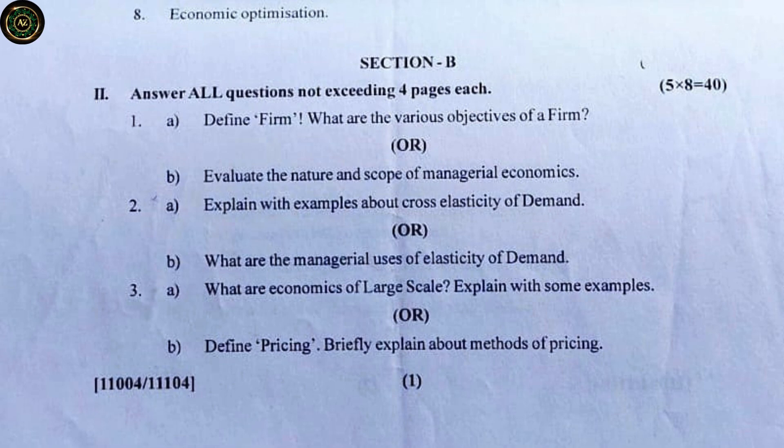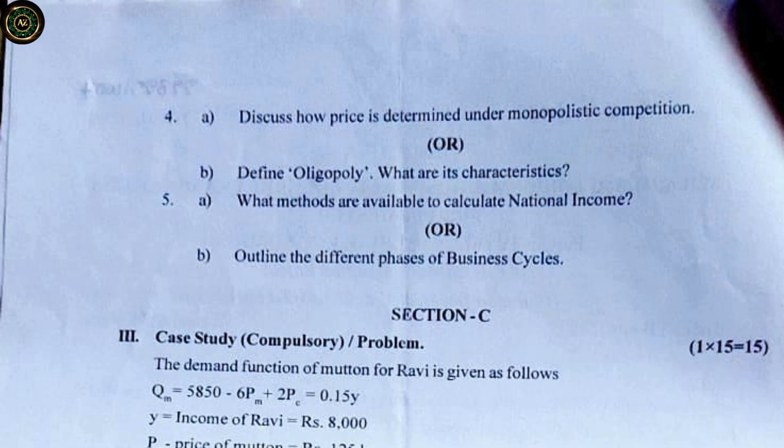Question 3: (a) What are economics of large scale? Explain with some examples. OR (b) Define pricing. Briefly explain about methods of pricing. Question 4: (a) Discuss how price is determined under monopolistic competition. OR (b) Define oligopoly. What are its characteristics?